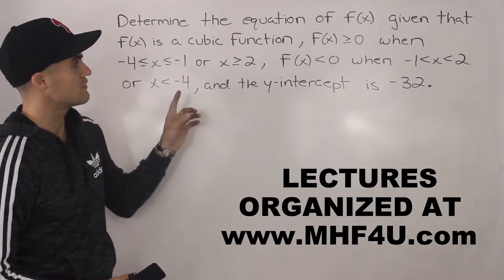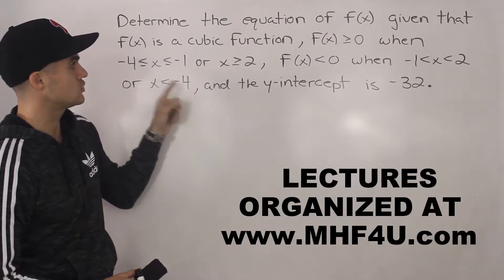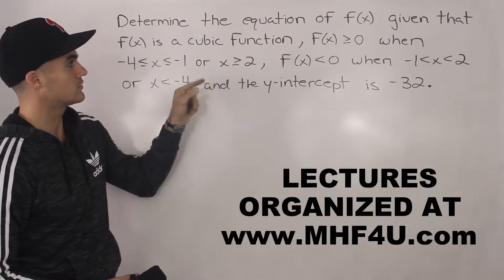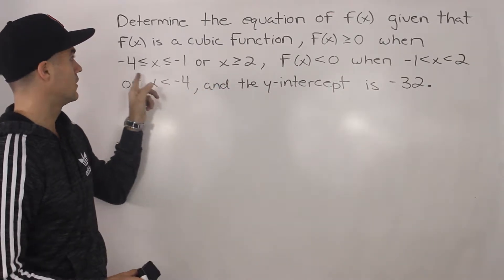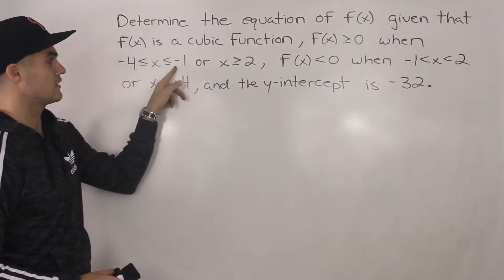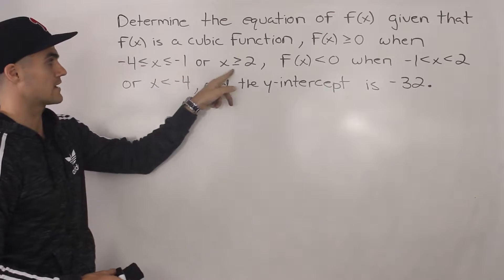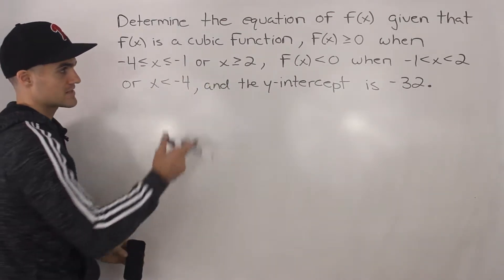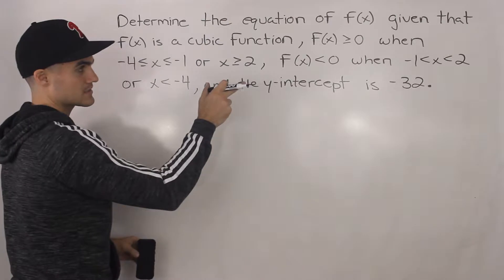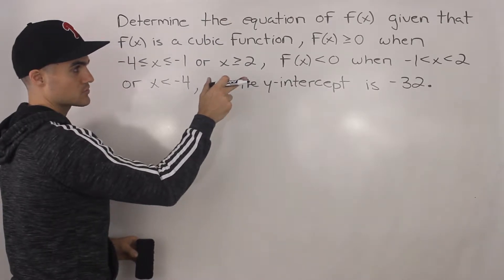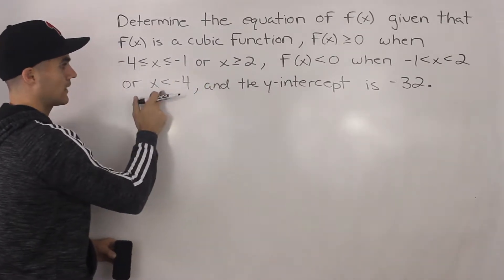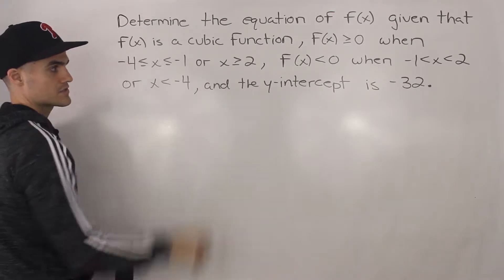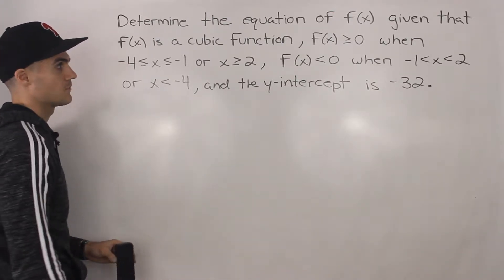So determine the equation of f of x given that f of x is a cubic function. f of x is greater than or equal to 0 when x is between negative 4 and negative 1, or when x is greater than or equal to 2. And f of x is less than 0 when x is between negative 1 and 2, or when x is less than negative 4. The y-intercept is negative 32.